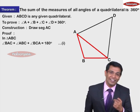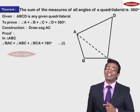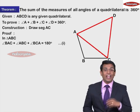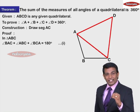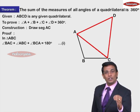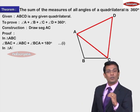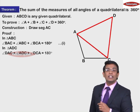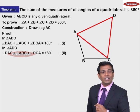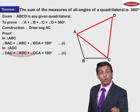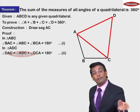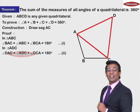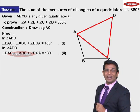Do we have one more triangle? Yes. Let's take triangle ADC. In triangle ADC, we write the sum of all three angles: measure of angle ADC plus measure of angle ACD plus measure of angle DAC is equal to 180 degrees — this is statement number two. The reason again is the sum of the measures of angles of a triangle is 180 degrees.